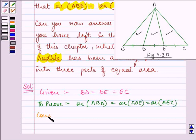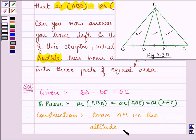For this we will draw AM, that is the altitude from A to BC.